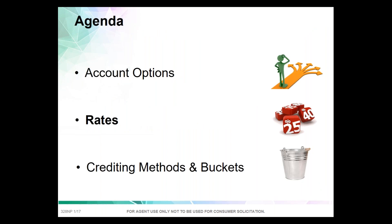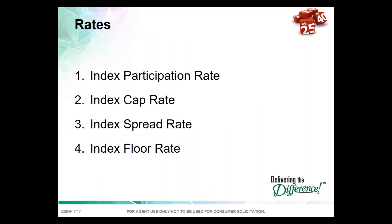Now let's move on to rates, where we start getting into some terms. We have a participation rate, a cap rate, a spread rate, and a floor rate. These terms can seem complex to people becoming familiar with indexed universal life, but they're just different methods of helping control an index — either limiting on the upside, which is necessary in order to provide the floor rate, which is a limit on the downside.